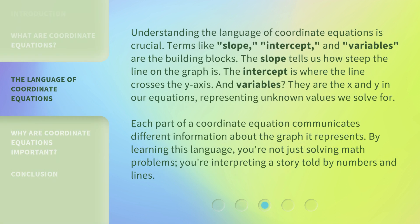Understanding the language of coordinate equations is crucial. Terms like slope, intercept, and variables are the building blocks. The slope tells us how steep the line on the graph is. The intercept is where the line crosses the y-axis. And variables? They are the x and y in our equations, representing unknown values we solve for.